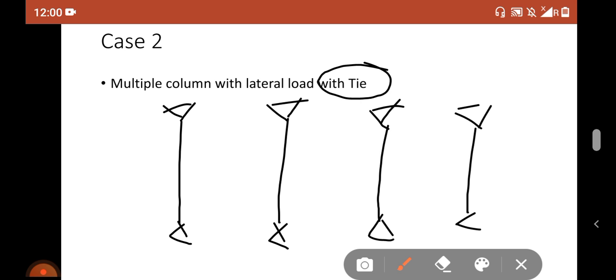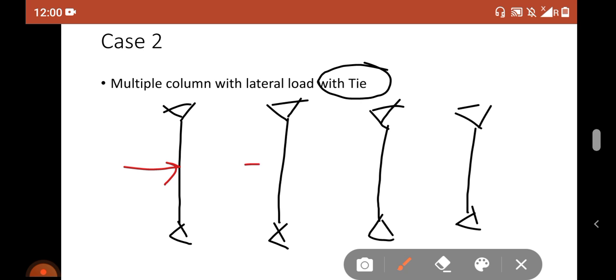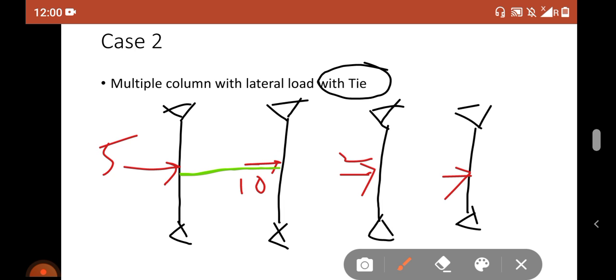And your lateral load was acting like this. Some were larger in magnitude - let's say this was 5 kilonewtons, this was 10 kilonewtons, this was 2 kilonewtons, like this. So what are you doing right now? You are simply connecting them through a tie like this. Why? So that the load can be redistributed.